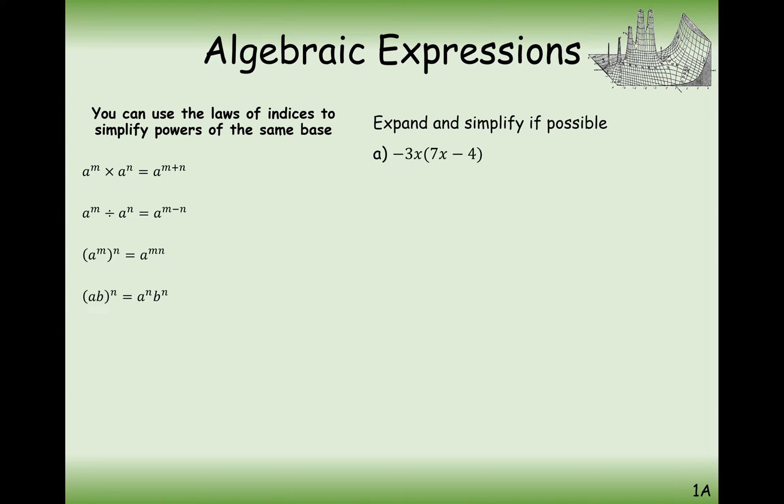Moving on to some expanding the brackets now. Hopefully, this is also familiar from GCSE. Remember, the technique here is that everything from the first part of the bracket, the first outside the bracket, multiplies by everything inside the bracket. And counting for double negatives as well. So the first part here, we're going to get minus 21 from the numbers. And then x times x is x squared. Think of this as x to the 1 times x to the 1. You can add those ones together. And then minus 3x times minus 4. That's plus 12x.